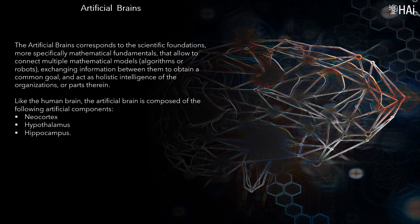Like the human brain, the artificial brain is composed of artificial components including the neocortex and hypothalamus.